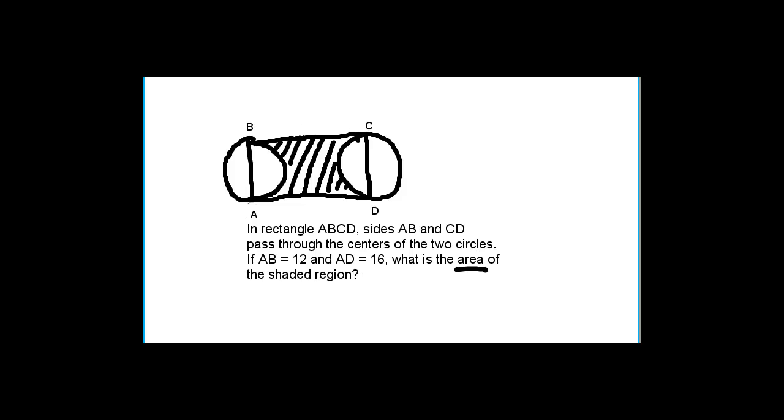Now, in order to get the shaded area, we always want to make it into a subtraction question. So really what we want to do is we want to find the area of the whole rectangle, and we want to subtract away two semicircles. We want to subtract this one, and we also want to subtract away this one. Once we've done that, we will have the area of the shaded region.